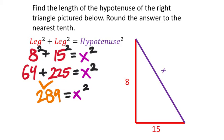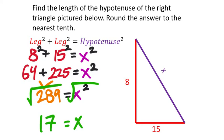Square rooting both sides to solve for x: the square root of 289 is just 17. That's pretty nice — an 8, 15, 17 triangle. This hypotenuse came out as a whole value with no decimals, no fractions, no irrational numbers, no square roots. This is what we call a Pythagorean triple. The most common one is a 3-4-5 triangle, and it can be scaled.